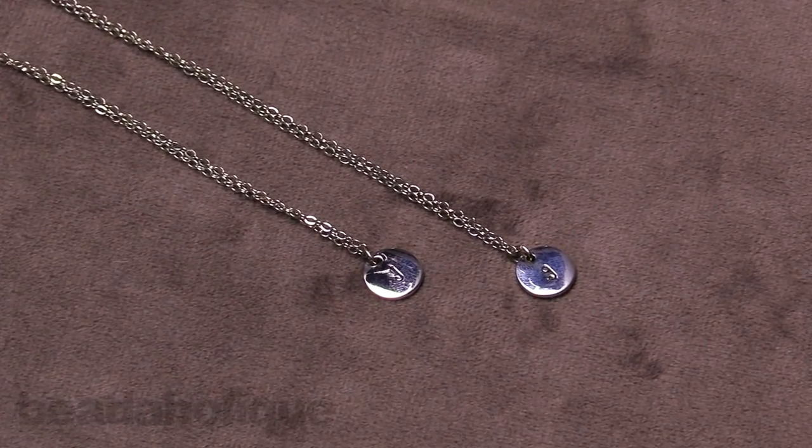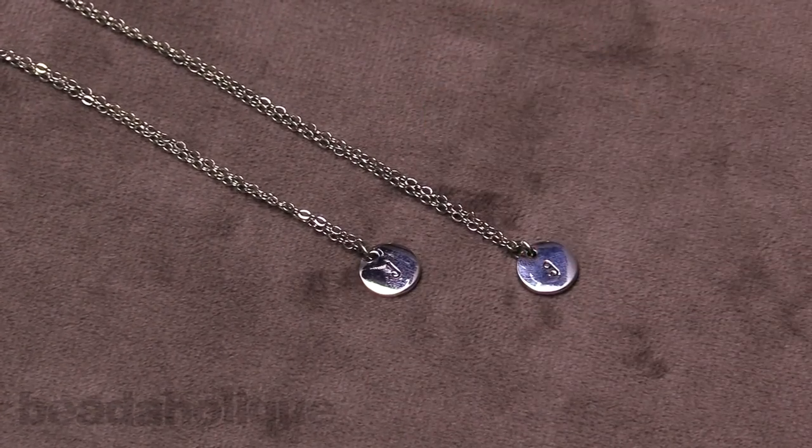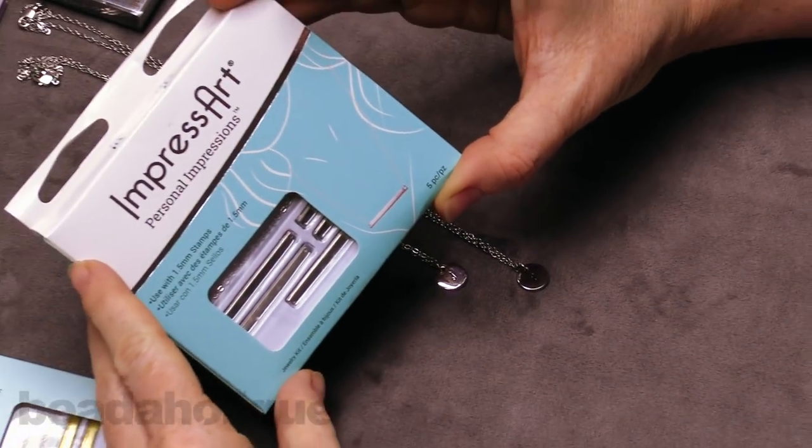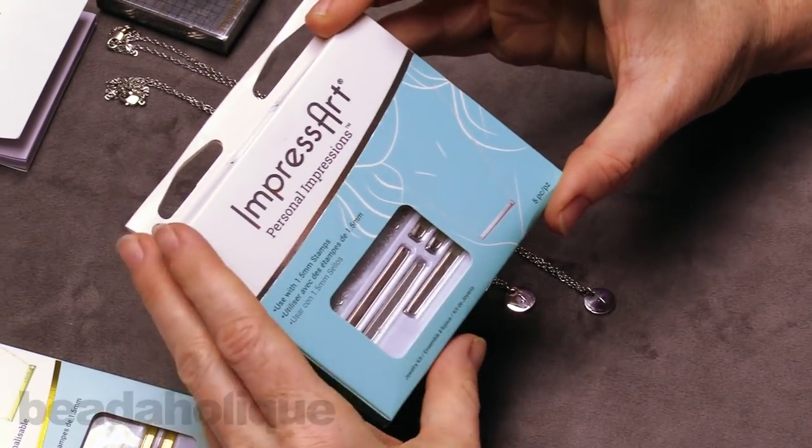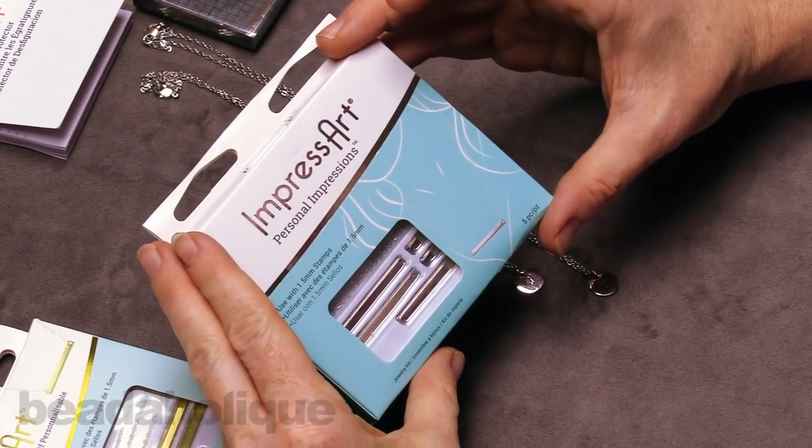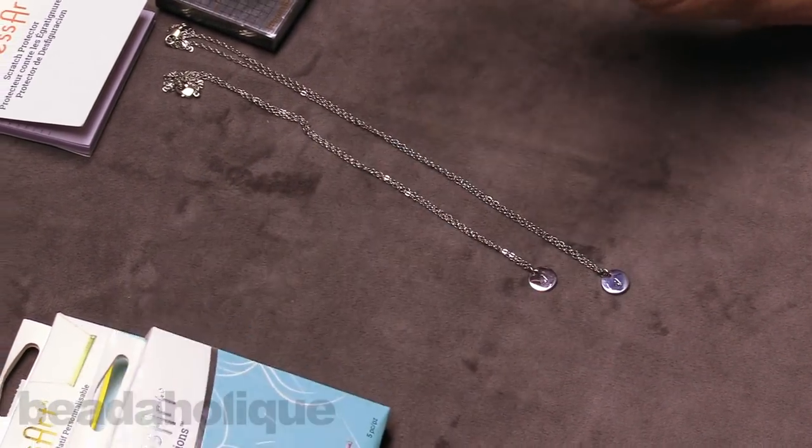So that is how you go ahead and you personalize these wonderful little kits. I'm going to show you them again. So you get five necklace kits within this one set. And they're really fun to do. A lot of different things you can do with them. And you can find them at Beadaholique.com.